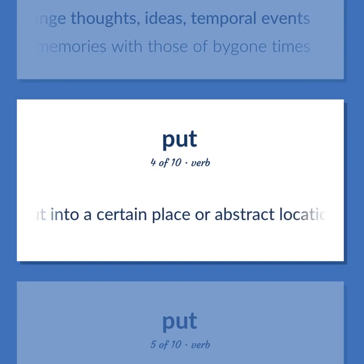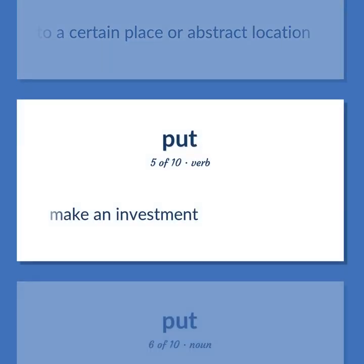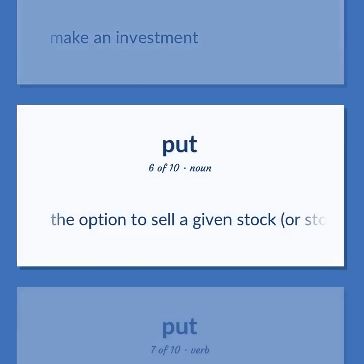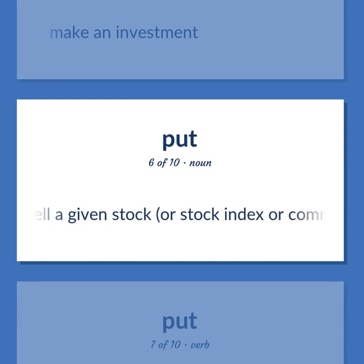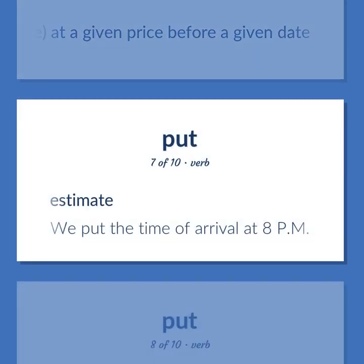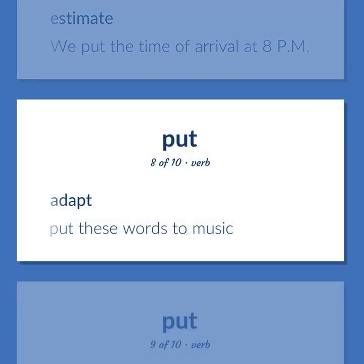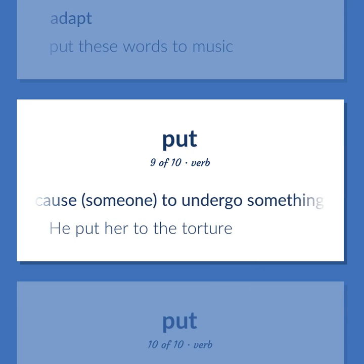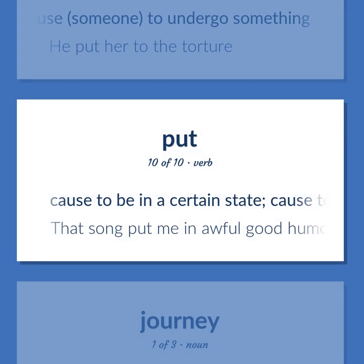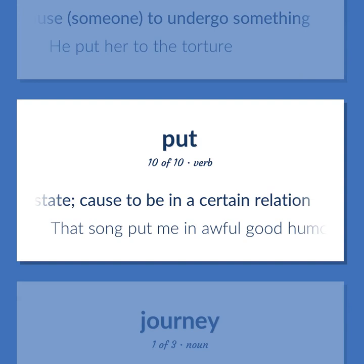Put into a certain place or abstract location. Make an investment. The option to sell a given stock or stock index or commodity future at a given price before a given date. Estimate. We put the time of arrival at 8 p.m. Adapt. Put these words to music. Cause someone to undergo something. He put her to the torture. Cause to be in a certain state. Cause to be in a certain relation. That song put me in awful good humor.